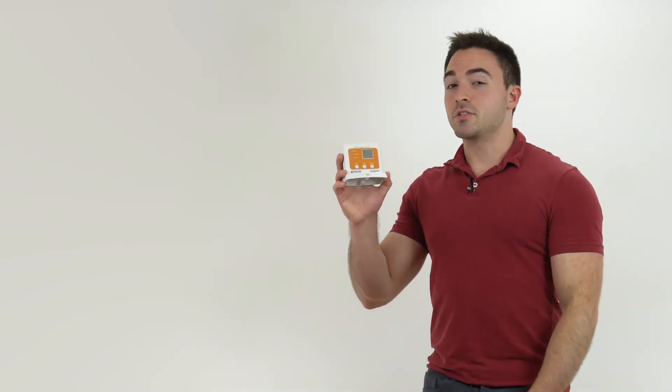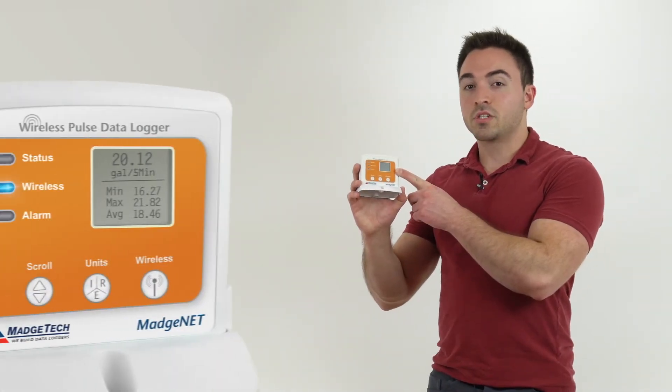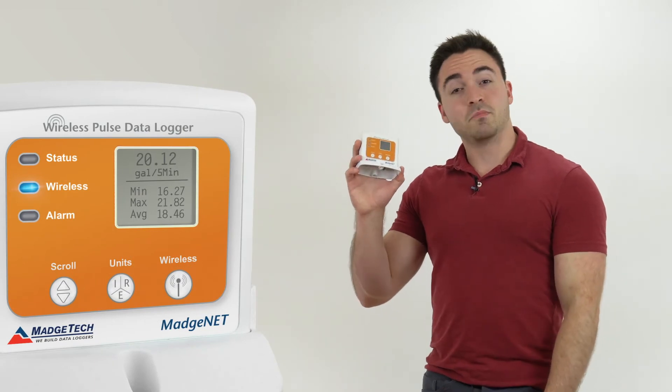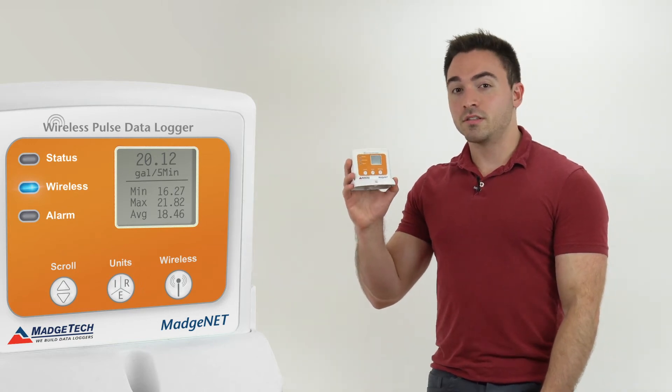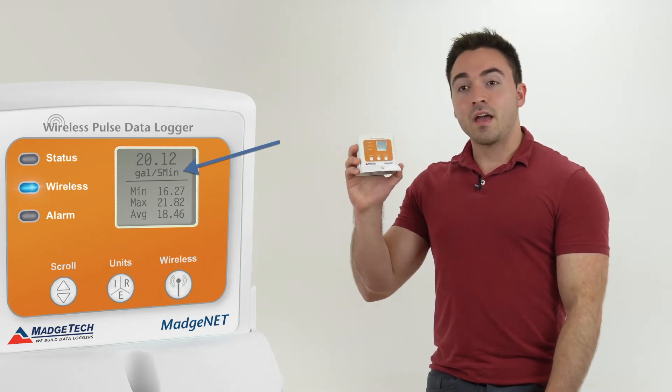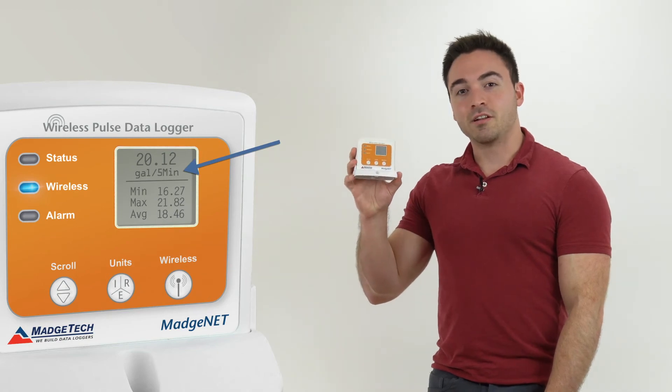The RF Pulse 2000A features a convenient LCD screen, which can display the current reading as well as minimum, maximum, and average statistics. And if any engineering units have been applied to the device that changed the unit of measure, say, to gallons per minute, that unit of measure will also update on the data logger's LCD.